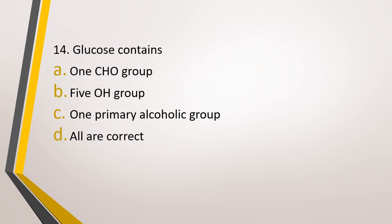Question number 14. Glucose contains: option A, one CHO group; option B, five OH groups; option C, one primary alcoholic group; or option D, all are correct. The correct answer is option D — all three are correct.